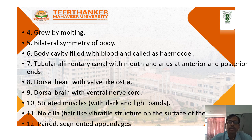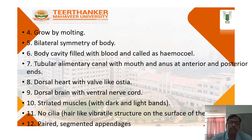Body cavity filled with blood and called as Haemocoel. Tubular alimentary canal with mouth and anus at anterior and posterior ends. Dorsal heart with valve-like Ostia. Dorsal brain with ventral nerve cord. Striated muscles with dark and light bands. No cilia. Excretory systems and paired segmented appendages.